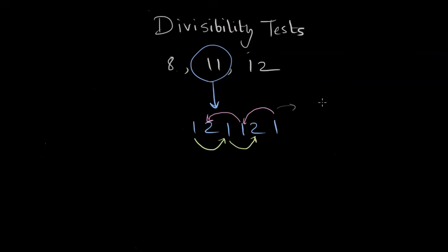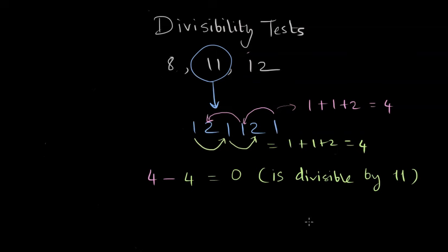This sum is going to be 1 plus 1 plus 2, which is 4. The other sum is 1 plus 2 plus 1, which is also 4. If the difference between both these sums is divisible by 11, then the given number has to be divisible by 11. This is the test.